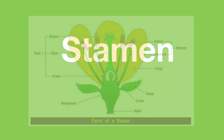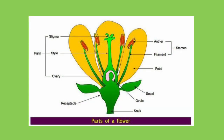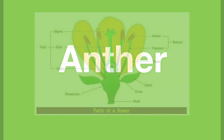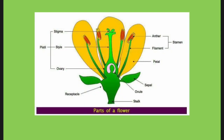We're now going to move on to the male part of the flower, which is known as the stamen. You can see the stamen here on the right hand side and it is made up of two parts. Let's start with the anther — you can see it located on top of what we call the filament.